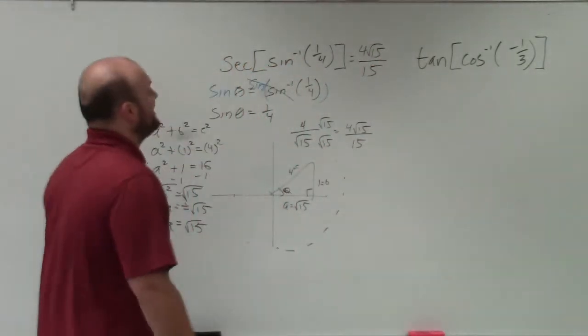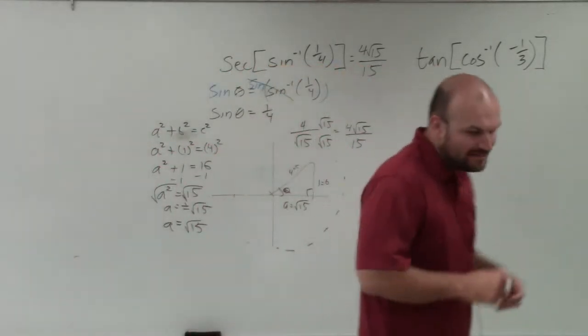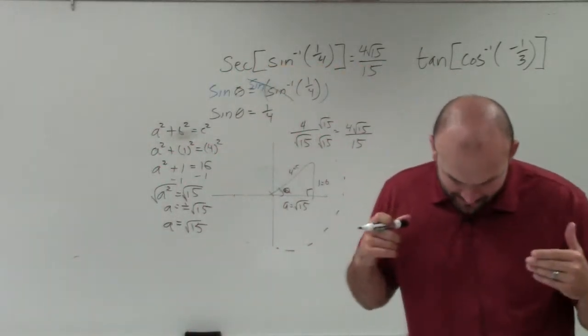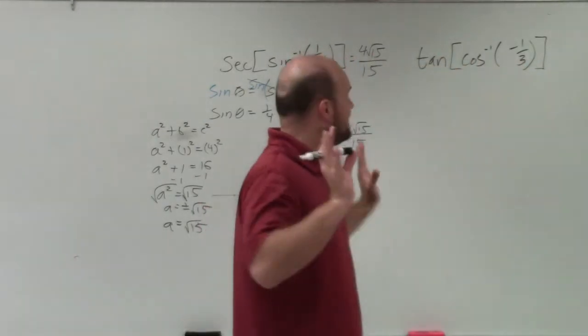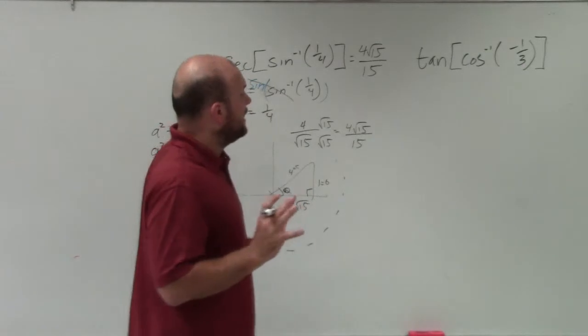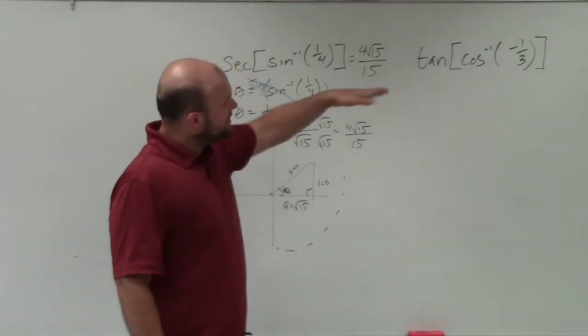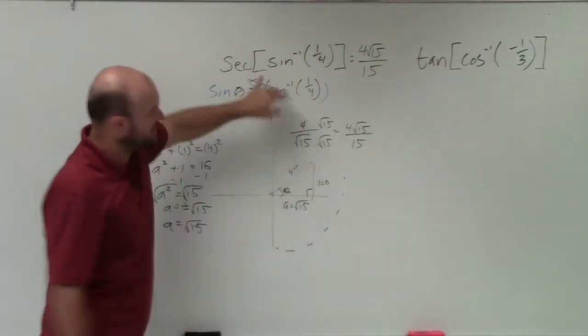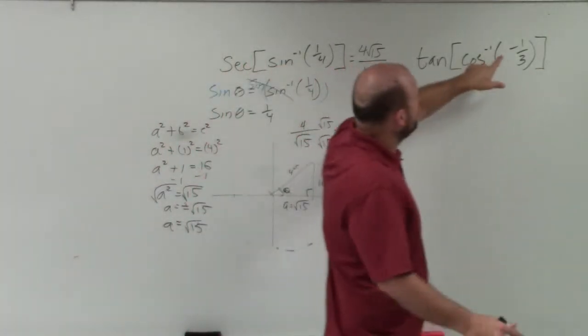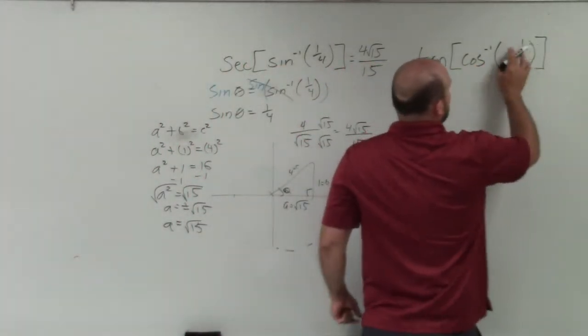So now let's get into the next one. So the next one, now what we want to do is evaluate for tangent of cosine inverse of negative 1/3. But now we have a negative angle, and the negatives always kind of make us a little bit tricky here. Because for cosine to be negative here, so instead of doing this whole little thing I did over here, I'm just going to draw my triangle. So when can cosine equal negative 1/3?